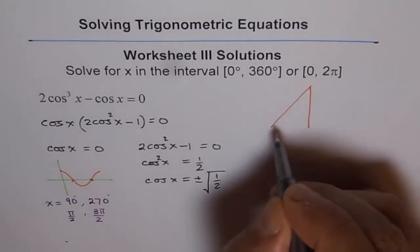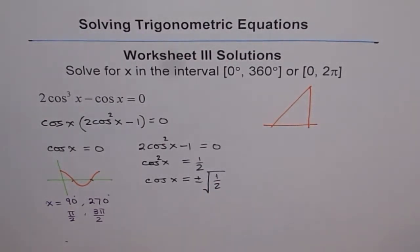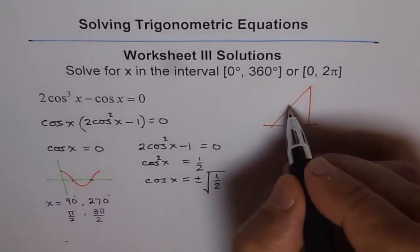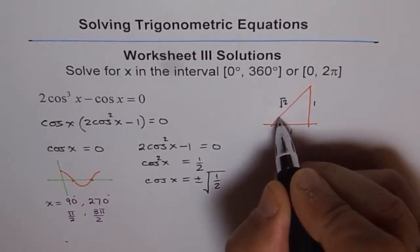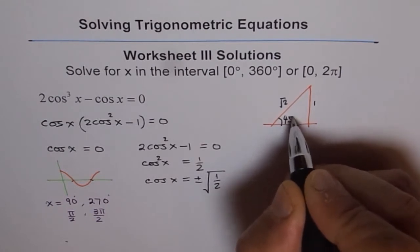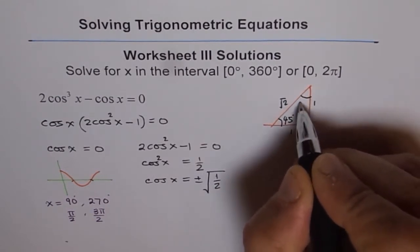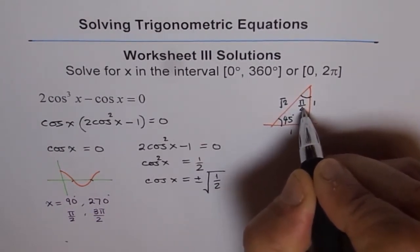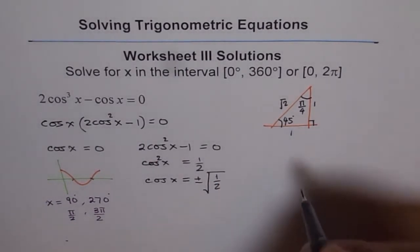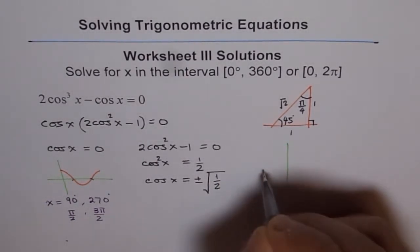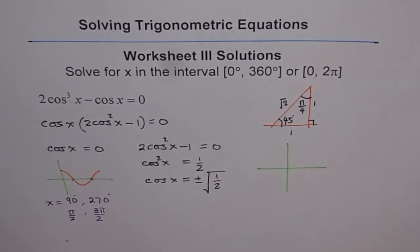1/√2 corresponds to your special triangle with 45 degrees, or π/4 in radians. The hypotenuse is √2, and that angle is 45 degrees. So 1/√2 is when x equals π/4, and we have four solutions here.